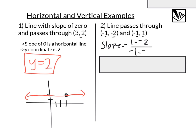When I subtract a negative, that's going to be the same as 1 plus 2, so that would be 3, over negative 1 plus 1, which is 0.